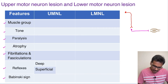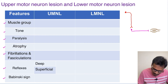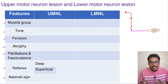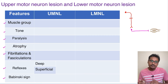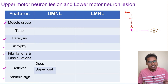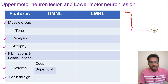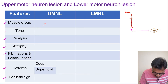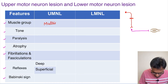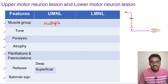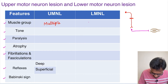Coming to the muscle group — in upper motor neuron lesion, it is going to innervate multiple levels of lower motor neuron, so a group of muscles will be affected. Whereas in lower motor neuron lesion, a single group or even a single muscle can be affected.